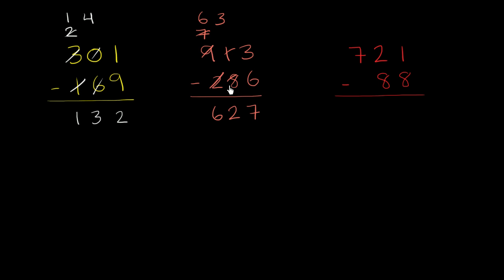And once again, try to pause the video, do it on your own. So I don't have any hundreds to subtract, so I can immediately go to 72 minus 8, which is really 720 minus 80, but let's just think in terms of 72 minus 8.